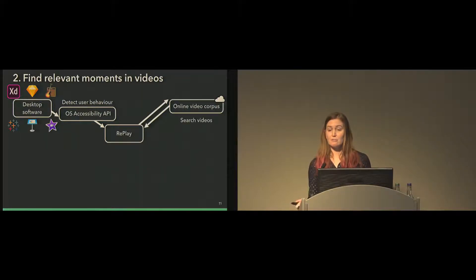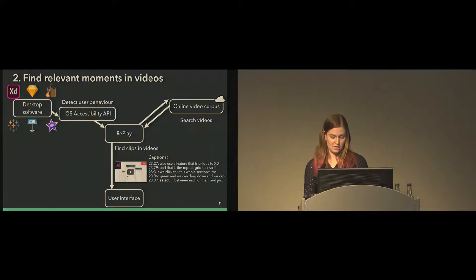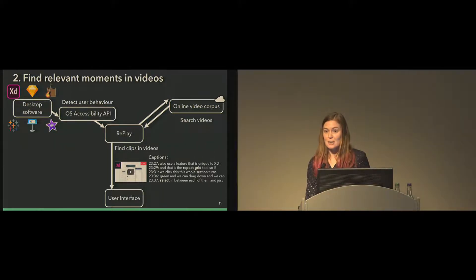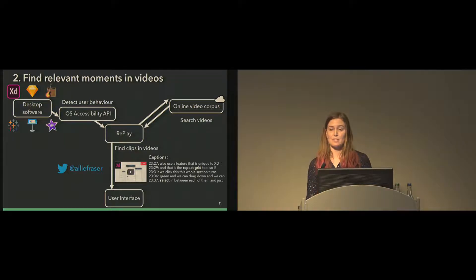To find relevant moments in videos, we first leverage an existing online video search engine — in this case YouTube — send the user's query there, and get a list of videos back. We then search the captions or subtitles for each video to find moments that match the user's query and the names of the tools they've been clicking on. YouTube automatically generates captions by default for most videos, so they're publicly available, though there's no official API yet for getting them. We found a roundabout way using an undocumented API — I wrote a post about it on my Twitter. Once we get these time-stamped captions, we identify the relevant moments and cache them on the user's local machine so they're faster to retrieve next time.